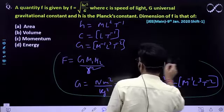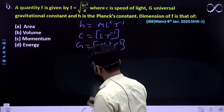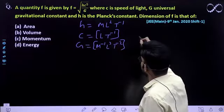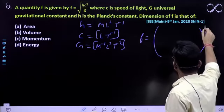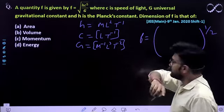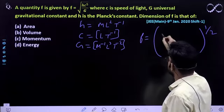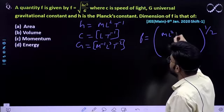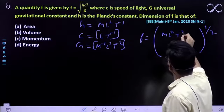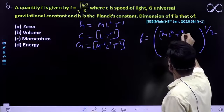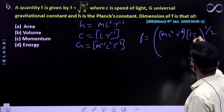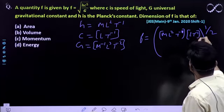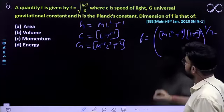Ab hum pehle wale formula mein yeh sari cheeze put kar denge. F ki value kitni hoti hai. Isko le lete hain half, kyunki it is under root. h ki value put karte hain: ML²T⁻¹. This expression that you are getting. And c ki value: (LT⁻¹)⁵.